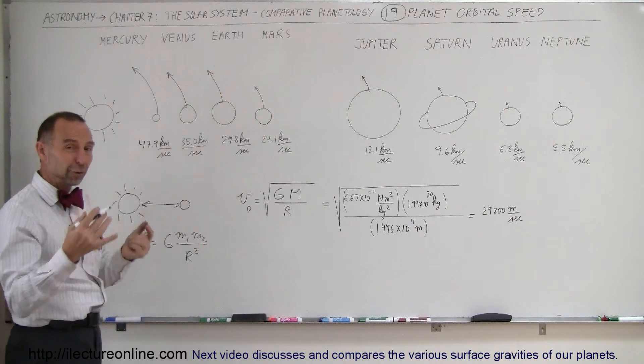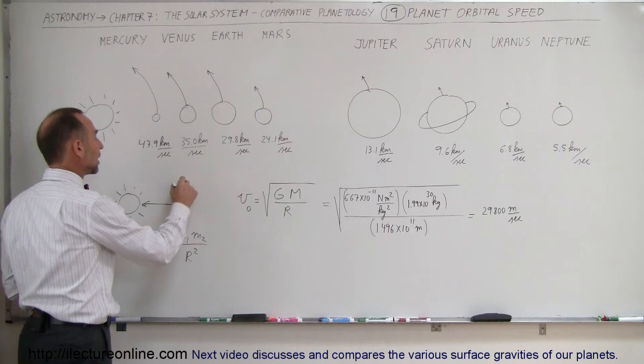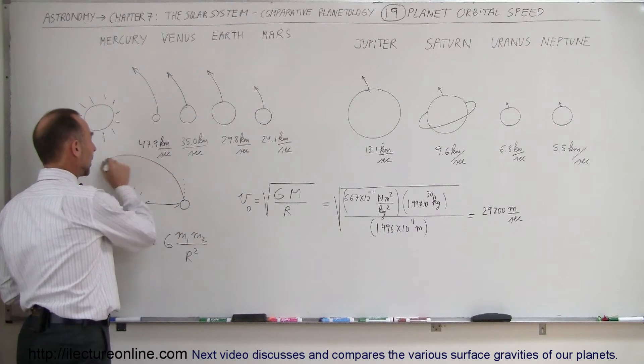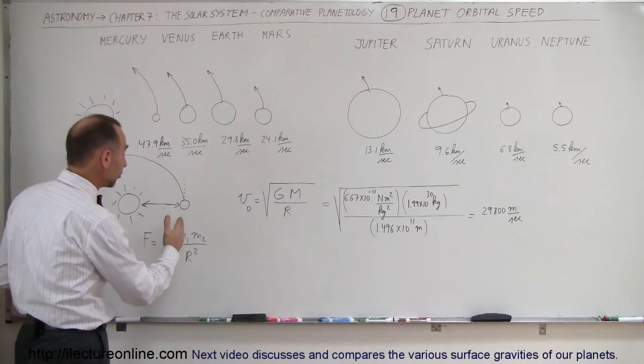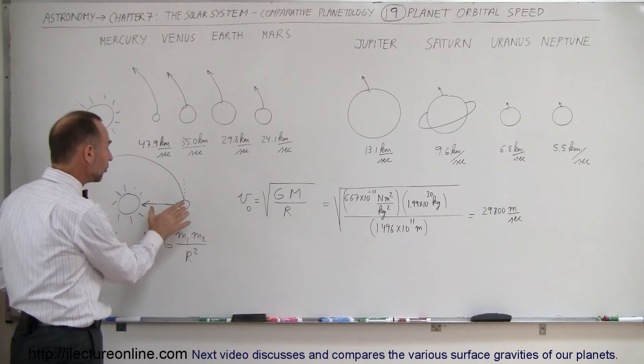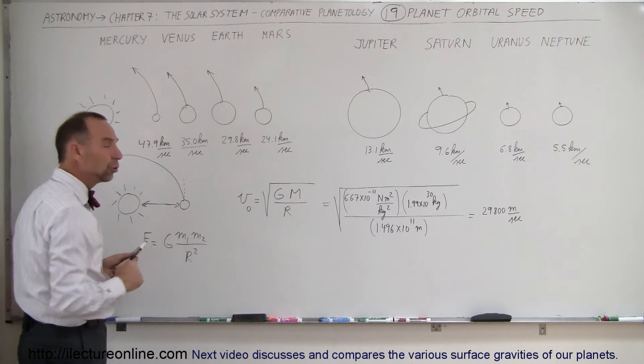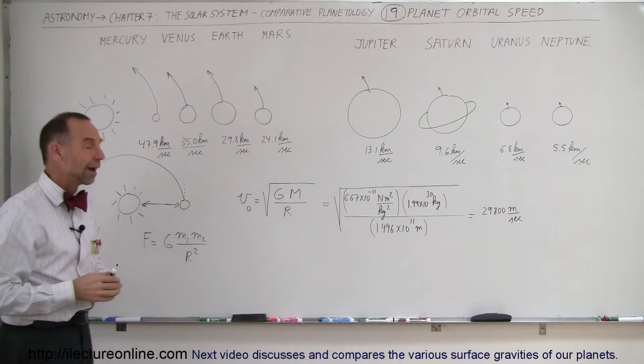Now, normally, if that gravitational force would not be there, the planet would go straight instead of on a path around the sun like this. Newton's first law says that any object in motion will simply continue a straight line motion unless some force comes along to change that. So, the force that we see here is equal to the gravitational force and it can be calculated by Newton's law of gravity.